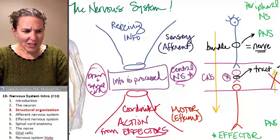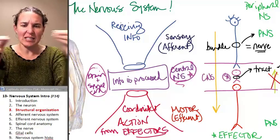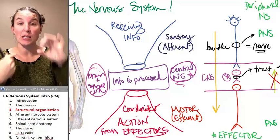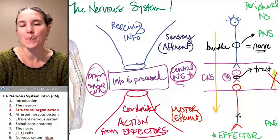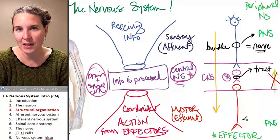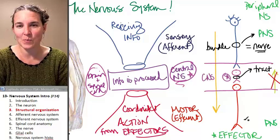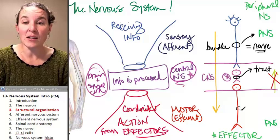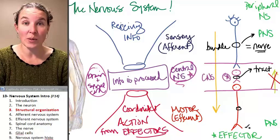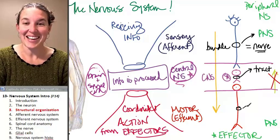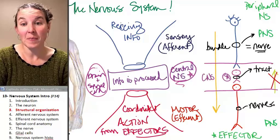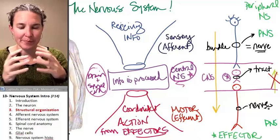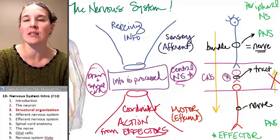The bundle of axons isn't literally traveling — it's holding still — but information travels through that bundle of axons. If the whole axon group is inside the central nervous system, it's a tract. If I had a bundle of axons out in the peripheral nervous system, it's called a nerve. There are only tracts when the whole axon group is inside the central nervous system.